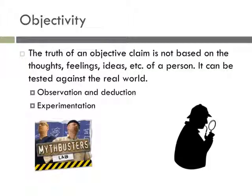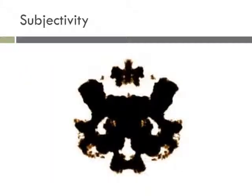Objectivity means knowledge that can be reality checked. The ways that we do this reality checking are observation, deduction, and experimentation. In contrast, subjectivity means knowledge or understanding that is internal and personal, and varies from individual to individual.